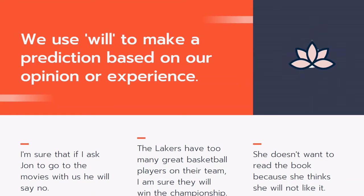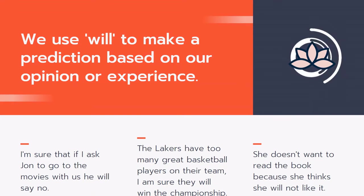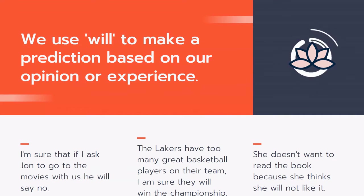'The Lakers have too many great basketball players on their team — I am sure they will win the championship.' That's my opinion that they will win. Another example: 'She doesn't want to read the book because she thinks she will not like it.' That's a prediction. Of course, she doesn't know if she will like the book or not — it's just her opinion.